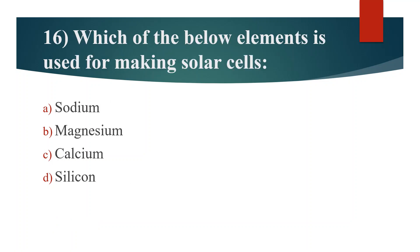Sixteenth question. Which of the below elements is used for making solar cells? Option A: Sodium. Option B: Magnesium. Option C: Calcium. Option D: Silicon. Answer is Option D: Silicon.